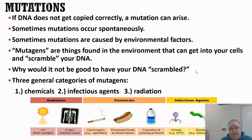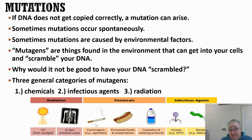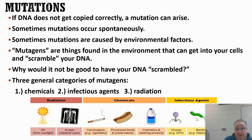There are generally three different categories of mutagens. One is chemicals — that can be a lot of things, from cosmetics and cleaning products to food additives, things that are carcinogenic or mutagenic, and chemicals found in cigarettes and smoke. Another is radiation — probably the most common forms are ultraviolet and X-ray radiation, which can be mutagenic. The third is infectious agents like viruses and bacteria, which can either get into your cells or release chemicals into your cells that cause mutations in your DNA.